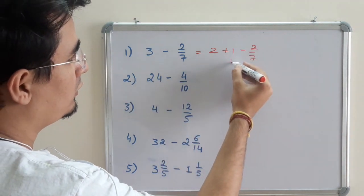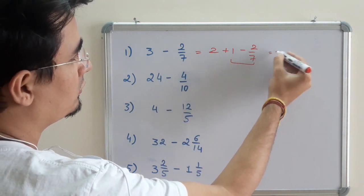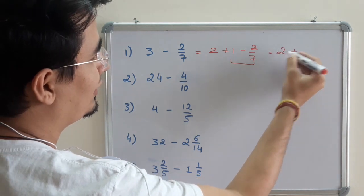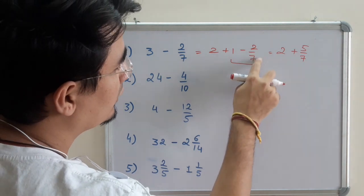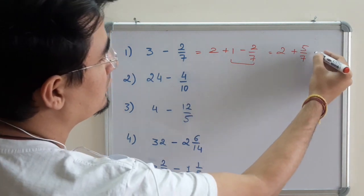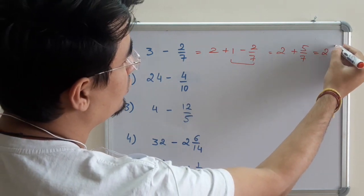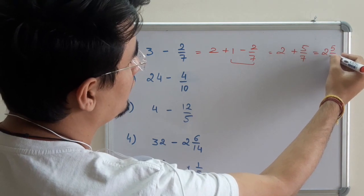So if I solve this thing we have already done. So it will be 2 plus 5 by 7. How do I get 5 by 7? 2 minus 7 is 5 by 7. So the answer is 2 plus 5 by 7.